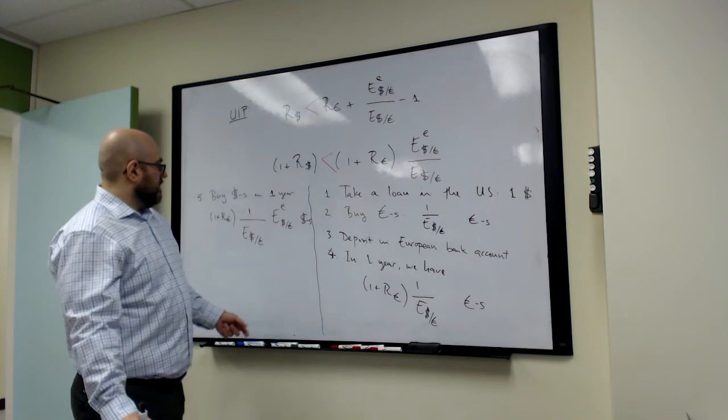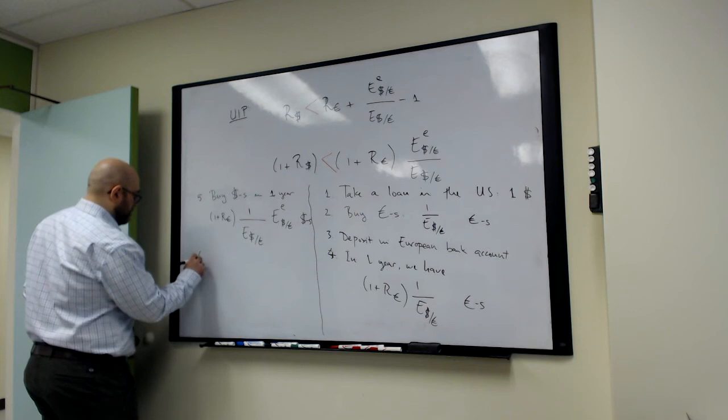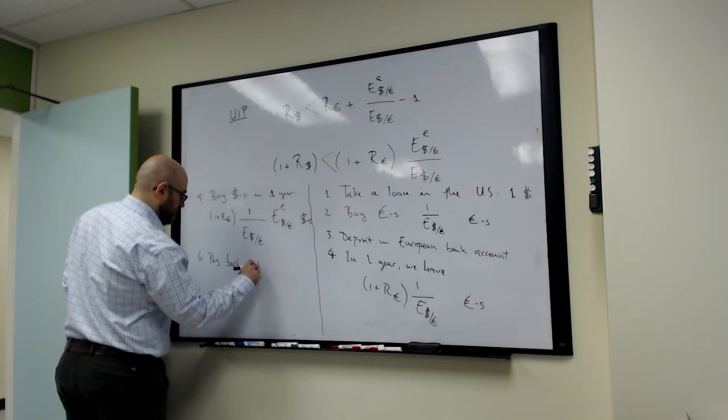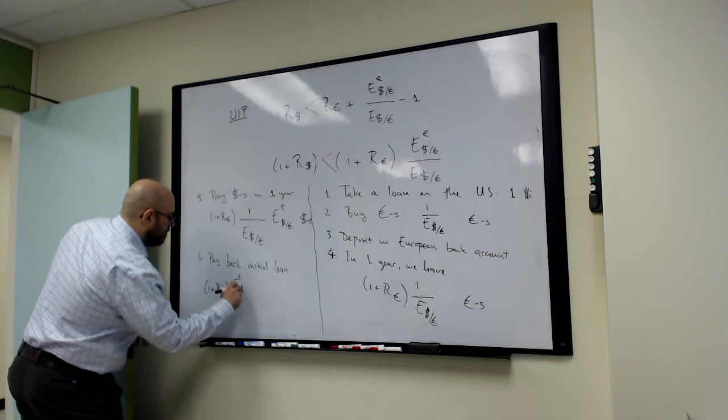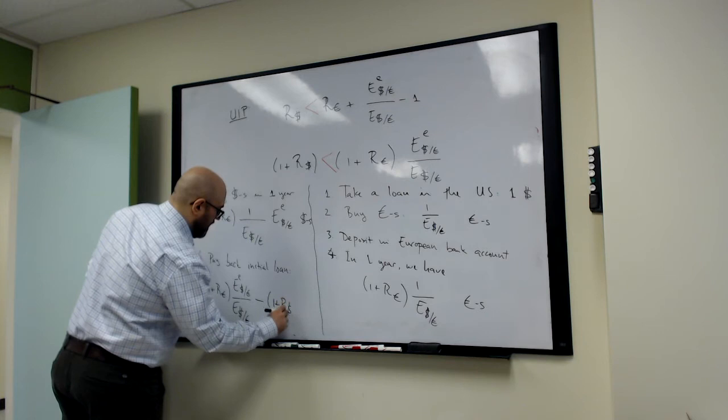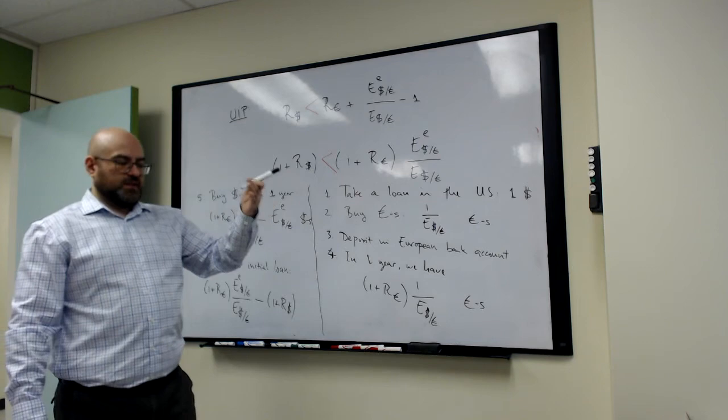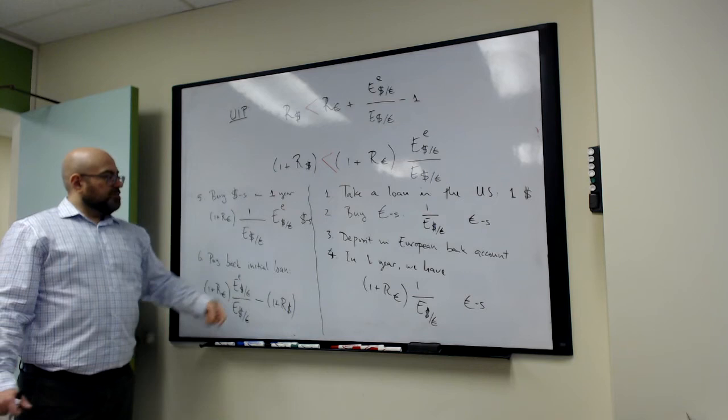Of course, now I got my dollars back from engaging in this European adventure. I need to pay back the initial loan I took. So I'm going to take this dollar amount and subtract what I owe to the US bank. This is the loan I took in step one. I went to a US bank and I said give me one dollar and I'll pay you 1 plus R_dollar in one year's time. And the bank said fine. So this is what I got from my European trades. And now I pay back the loan with interest.